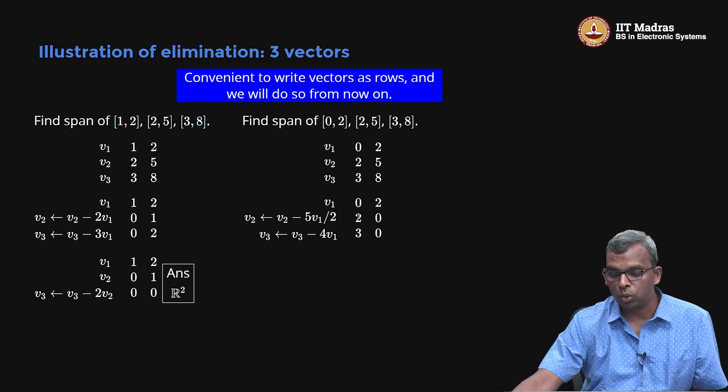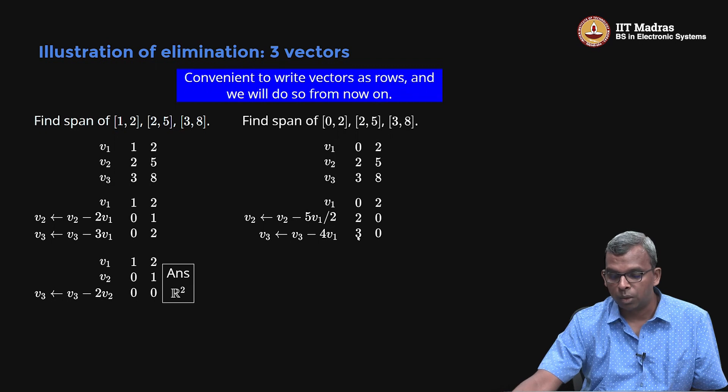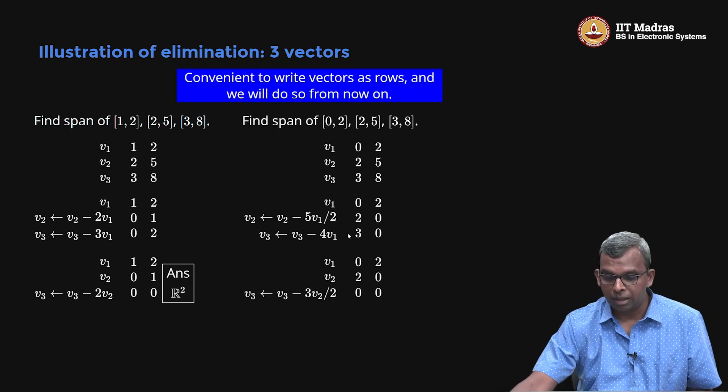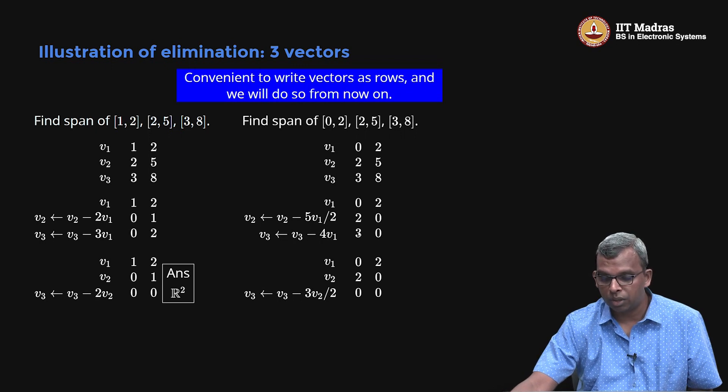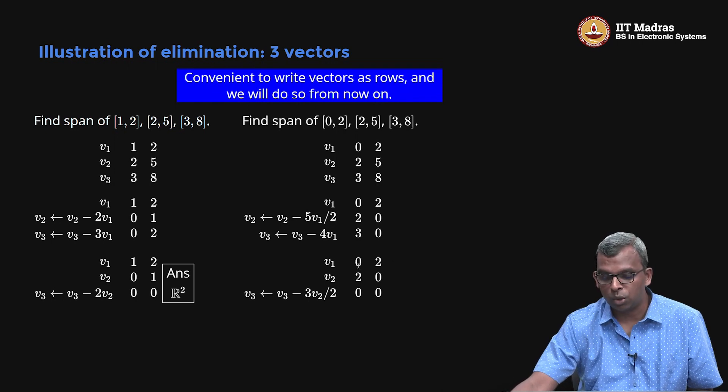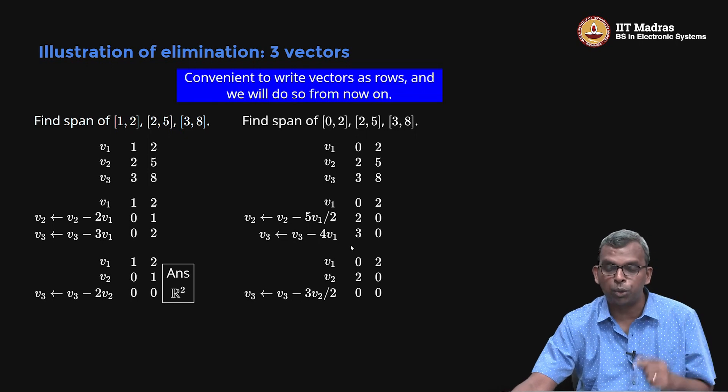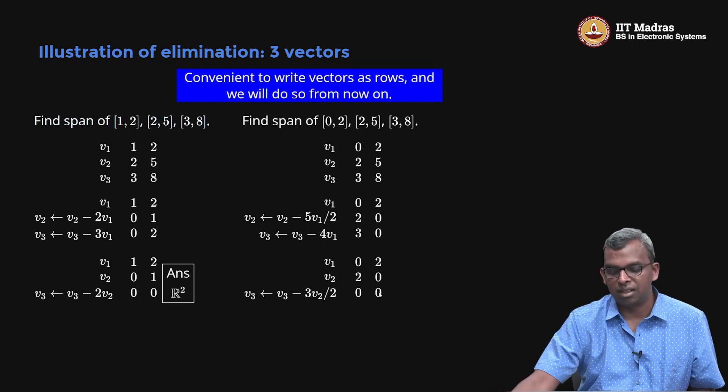I have 0, 2, I have 2, 0 here and 3, 0. Notice this non-zero and this 3 is there. Using this non-zero I can eliminate this 3 and this 0 will go away. So notice the same step as before: V3 minus 3 by 2 V2. How did I get the 3 by 2? So that is where 3 minus 3 by 2 into 2, it will cancel off and give me 0. So I have got 0, 2, then 2, 0, then 0, 0. In all these elimination processes span is not changed at all. The span of all these 3 remains the same because I used the property 2 to come up with these changes.